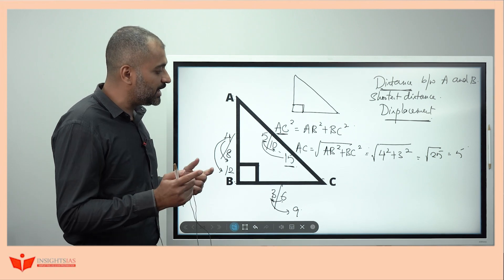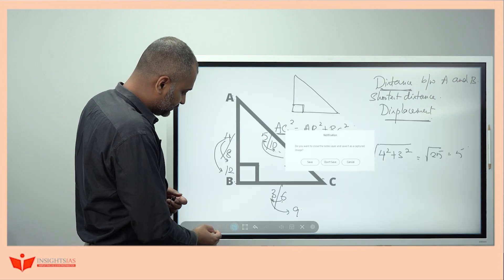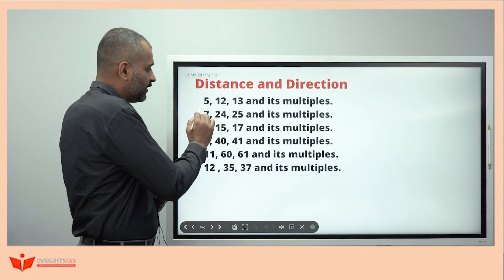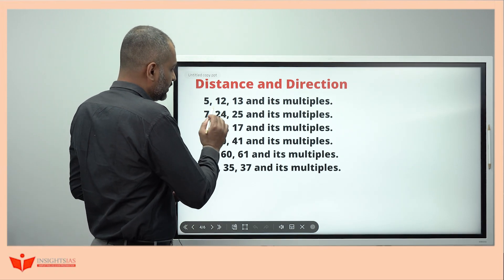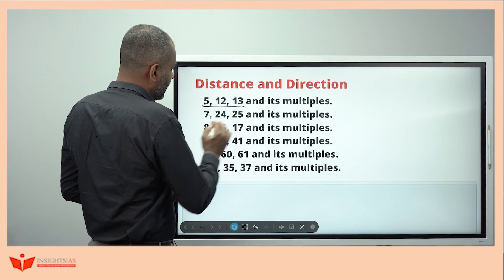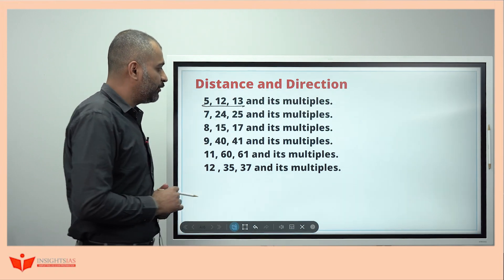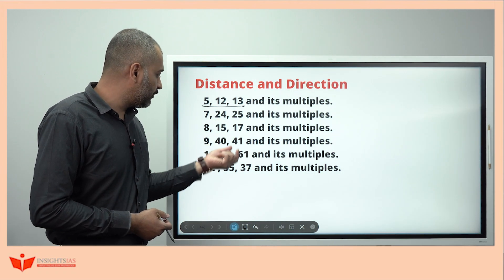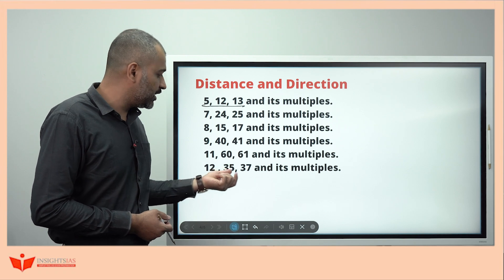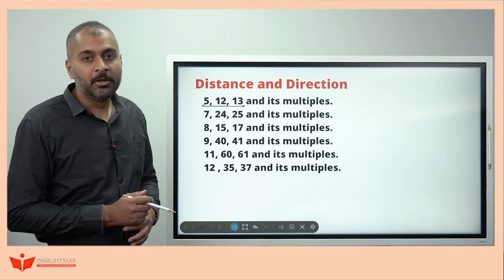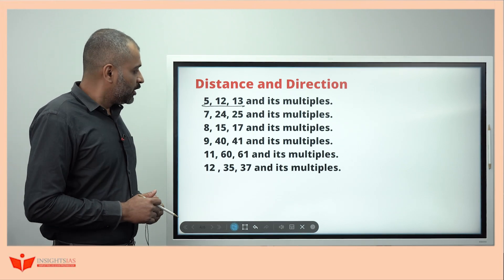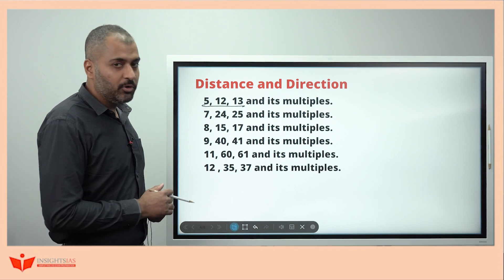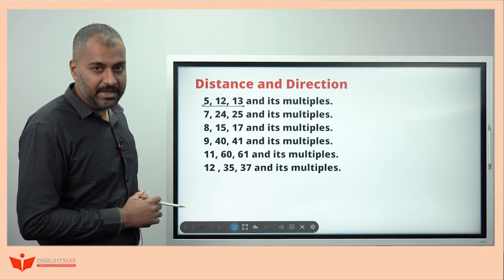There are many other Pythagorean triplets to remember. These include: 5, 12, 13; 7, 24, 25; 8, 15, 17; 9, 40, 41; 11, 60, 61; and 12, 35, 37. Try to remember these — they will help you a lot of time in the exam.